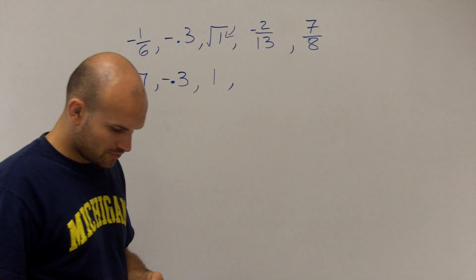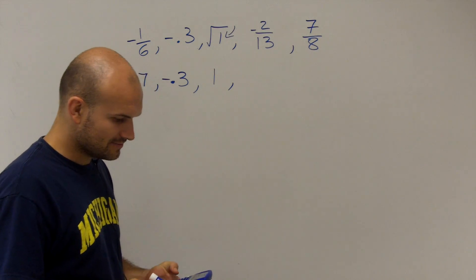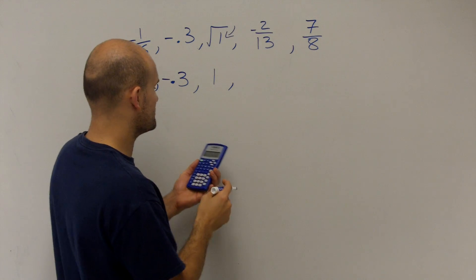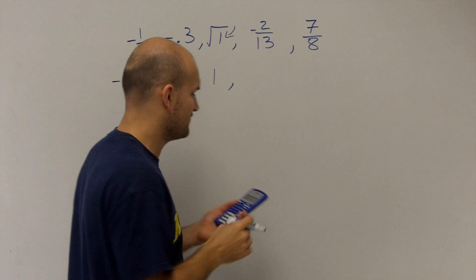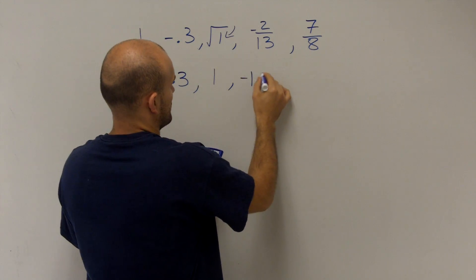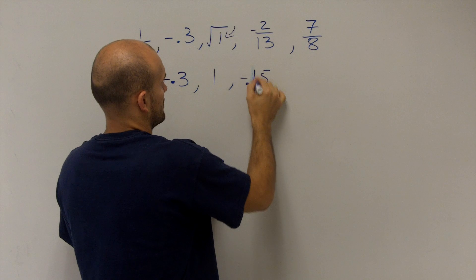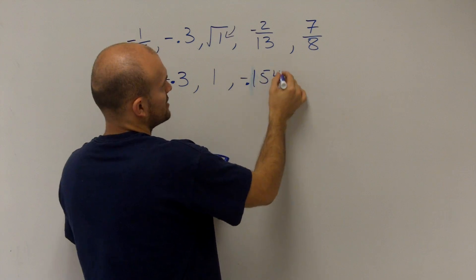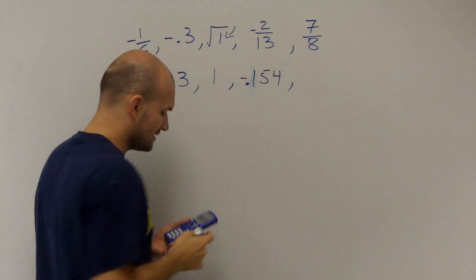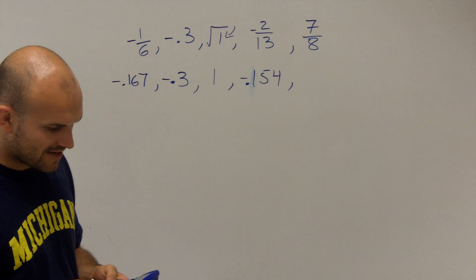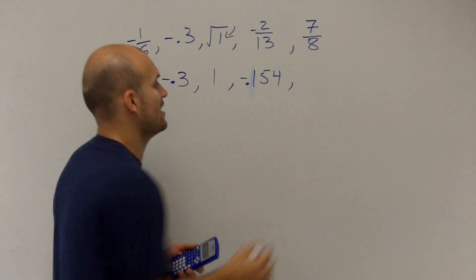Then I have negative 2 divided by 13. That's going to produce me a negative, I'm sorry, 0.1538, which I'll round to a 4. Then I do 7 divided by 8, which is 0.875.